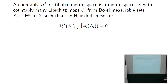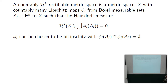The intrinsic flat limit spaces are what we call integral current spaces: countably H^k rectifiable metric spaces. These are metric spaces X with countably many Lipschitz maps phi_i from Borel-measurable sets inside Euclidean k-space to X, such that the Hausdorff measure of everything not covered is zero. The phi_i can be chosen to be bi-Lipschitz (a theorem of Kirchheim), with phi_i(A_i) and phi_j(A_j) disjoint.